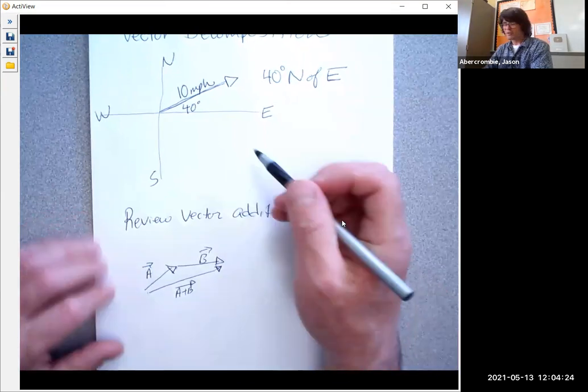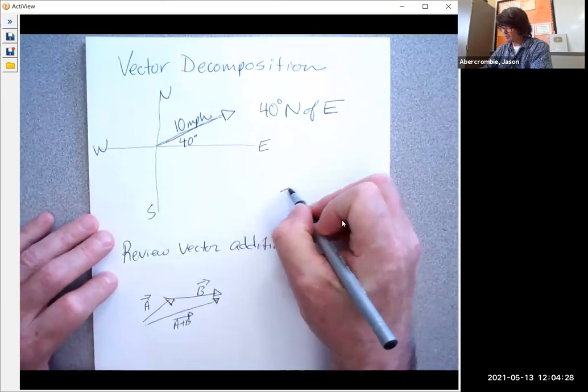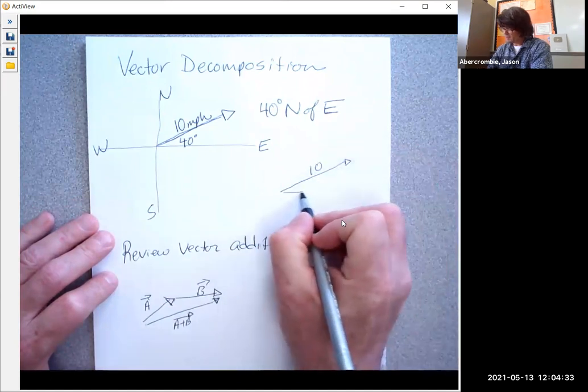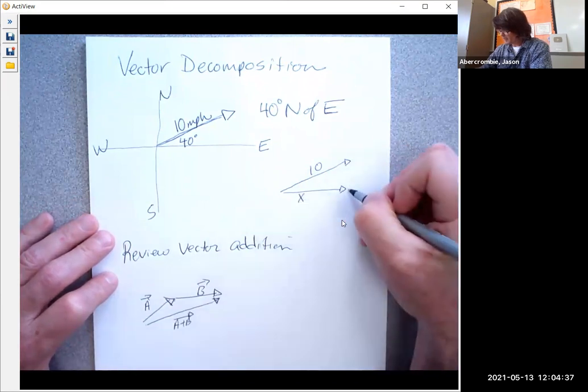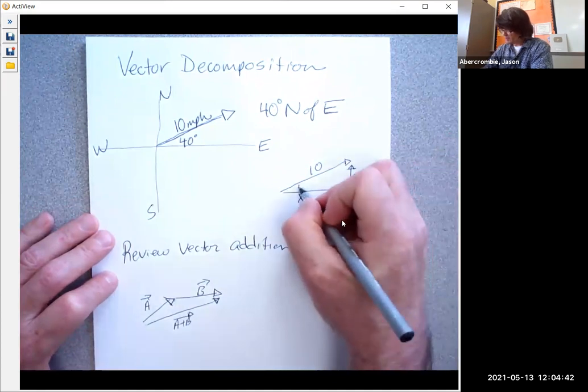With my vector up here, what I'm going to do is take my 10 miles per hour and we'll just redraw it right here. That's 10. I'm going to draw the x direction vector right here and my y direction vector right there. This is 40 degrees.